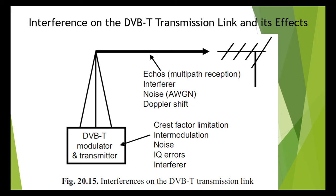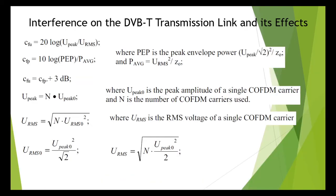To calculate the crest factor in COFDM signals, the crest factor is usually defined as CFU = 20 log(U_peak / U_RMS). Power meters and spectrum analyzers are sometimes also calibrated to the definition: CFP = 10 log(PEP / P_average), where PEP is the peak envelope power (U_peak / √2)² / Z₀ and P_average is U_RMS² / Z₀. The two crest factor definitions will differ by 3 dB — that is, CFU = CFP + 3 dB, meaning CFU is greater.